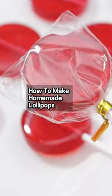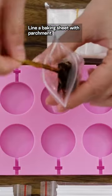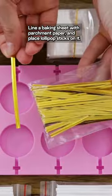How to Make Homemade Lollipops. Line a baking sheet with parchment paper and place lollipop sticks on it.